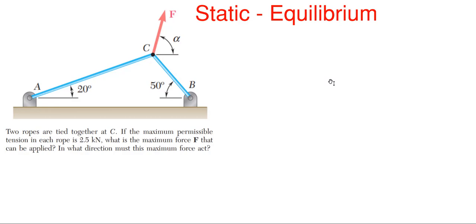So today we'll be looking at static equilibrium, and we're going to be solving the problem shown on the screen. With this problem, we have two ropes that are tied together at point C. If the maximum tension force in each rope is 2.5 kilonewtons for AC and AB, what does the maximum force F have to be in order to make these ropes have a tension of 2.5 kilonewtons? And it is also asking what is this angle alpha — in what direction is this force F acting?